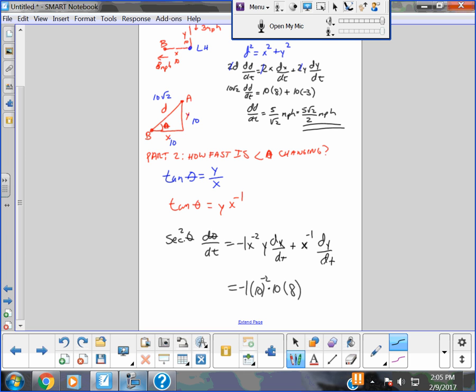All right, from the problem above, plus 10 to the negative 1. dy dt was negative 3. d theta dt is what we're looking for. That's the unknown.